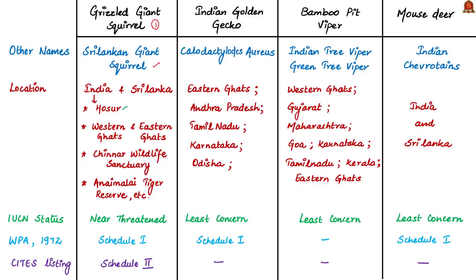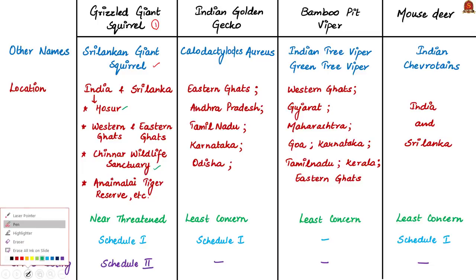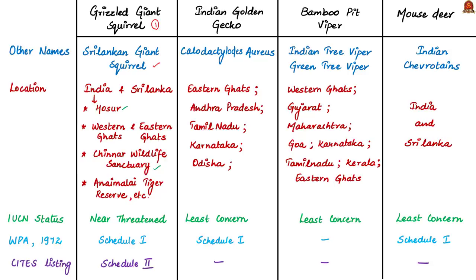The largest populations in southern India are recorded from Chinnar Wildlife Sanctuary and Grizzled Squirrel Wildlife Sanctuary. Scattered populations are also found in Theni Forest Division, Anamalai Tiger Reserve, Palani Hills, Sirumala Hills and Kaveri Wildlife Sanctuary. The species is restricted to patchy riverine habitats in the rain shadow areas of southern India and feeds primarily on seeds of immature and mature fruits. Due to its restricted distribution, small population size and anthropogenic pressure, this species is classified under the 'Near Threatened' category of the IUCN Red List, and is listed in Schedule 1, Part 1 of the Wildlife Protection Act of 1972.